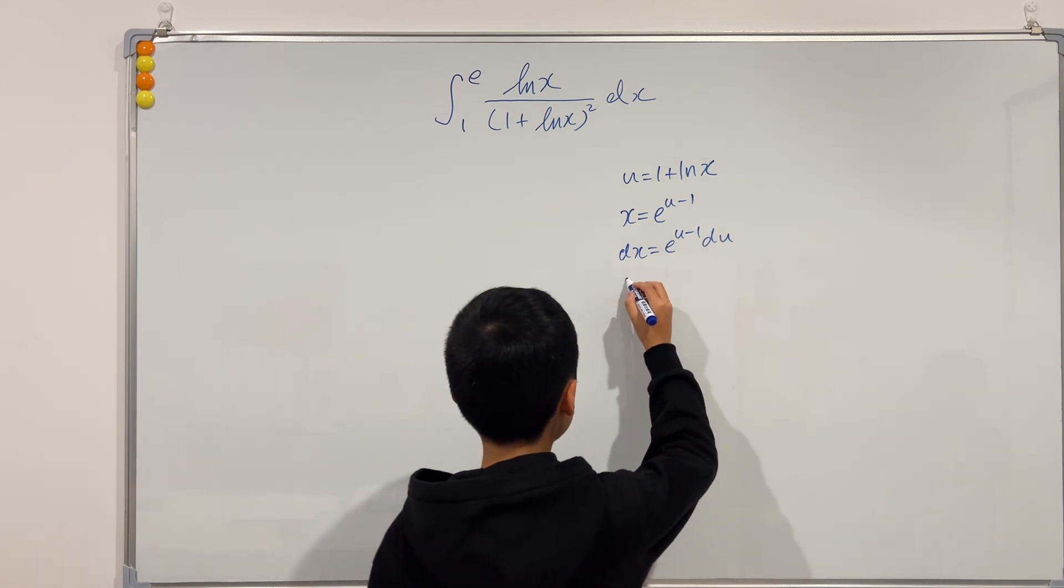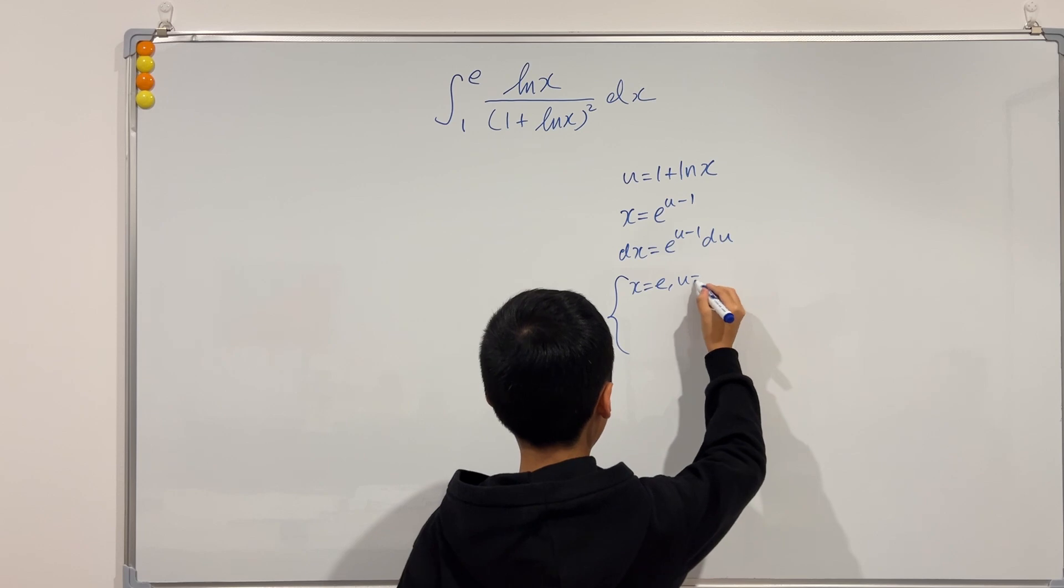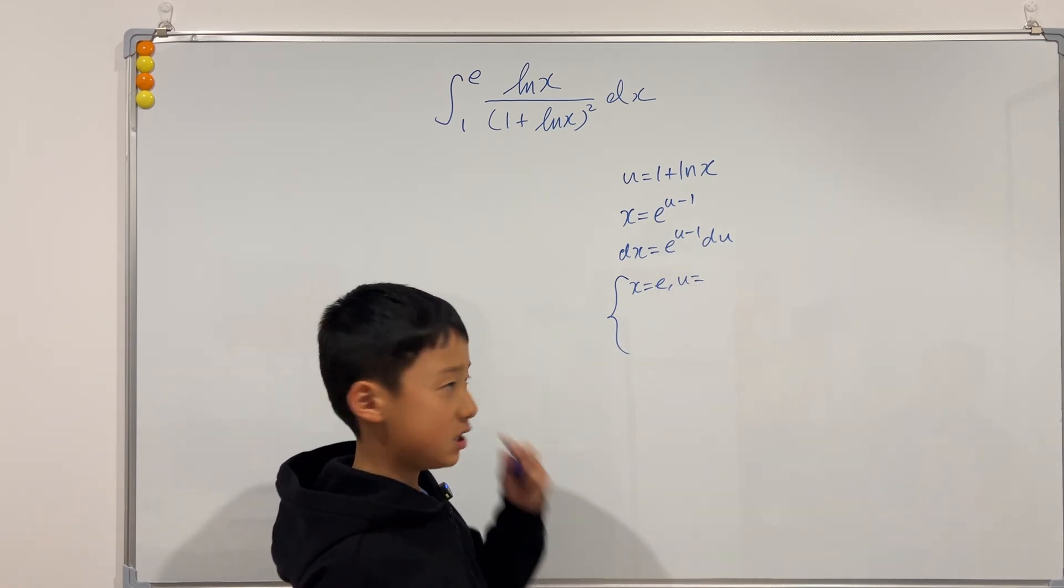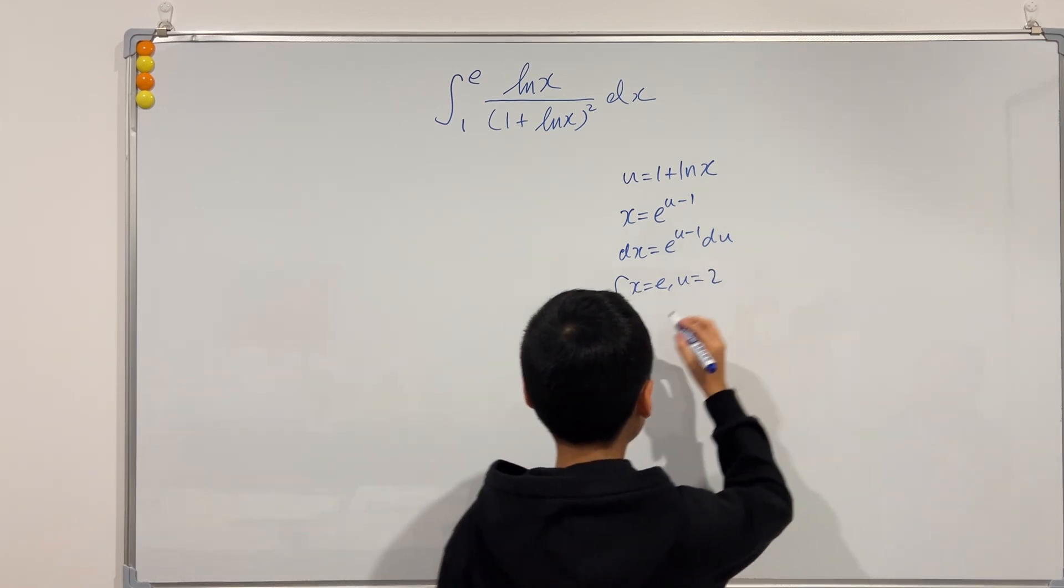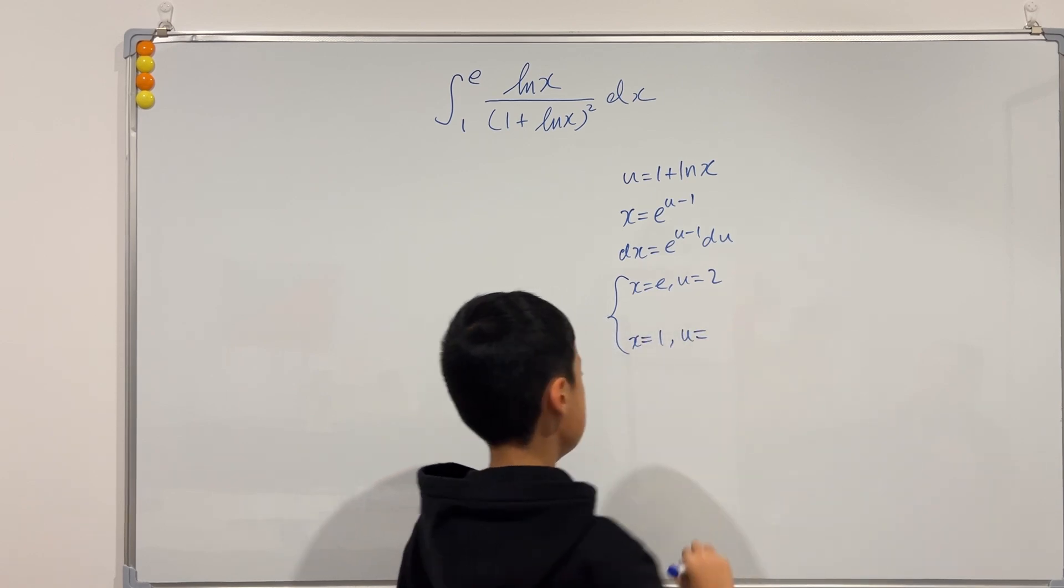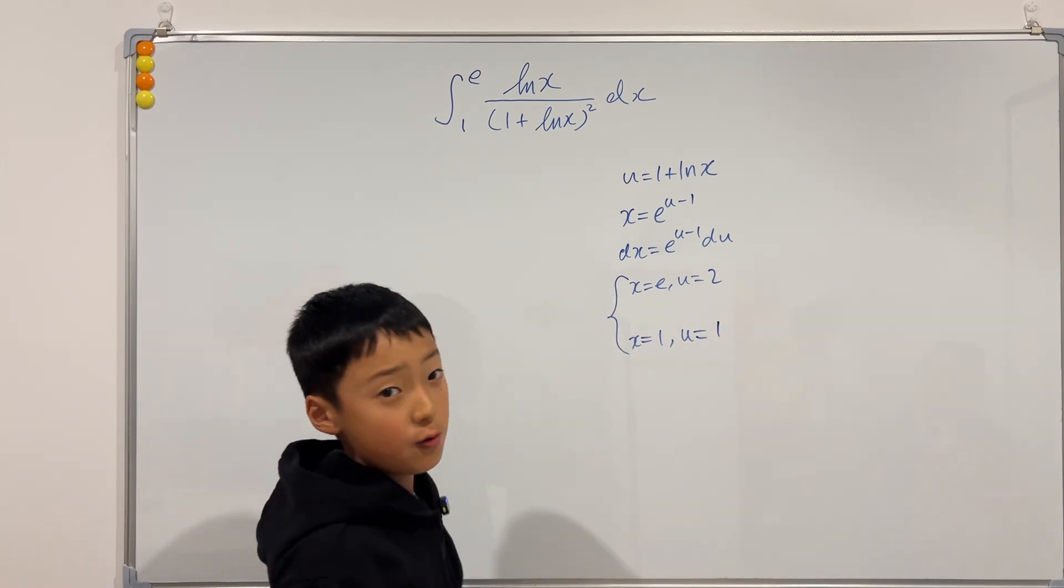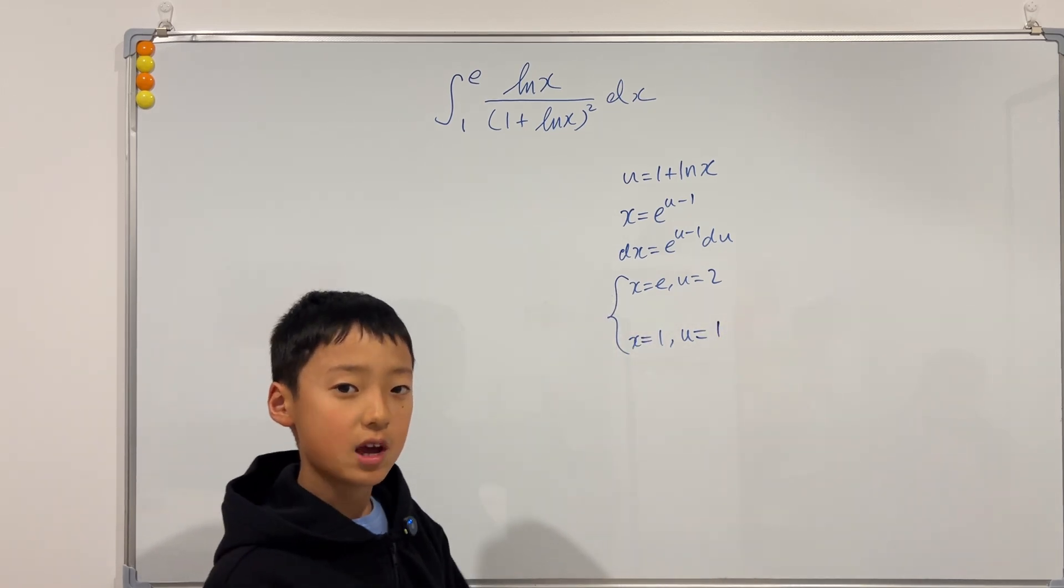And then if we do the bounds, when x is equal to e, we can solve it by itself, u will actually be 2. And when x is equal to 1, u will be 1. So now we have constructed a new integral, and we can write that on the board.